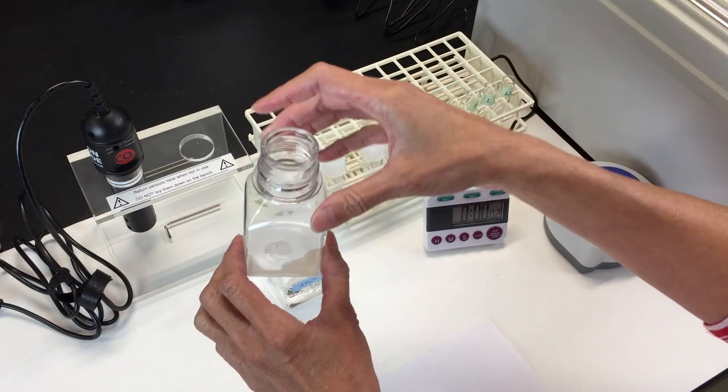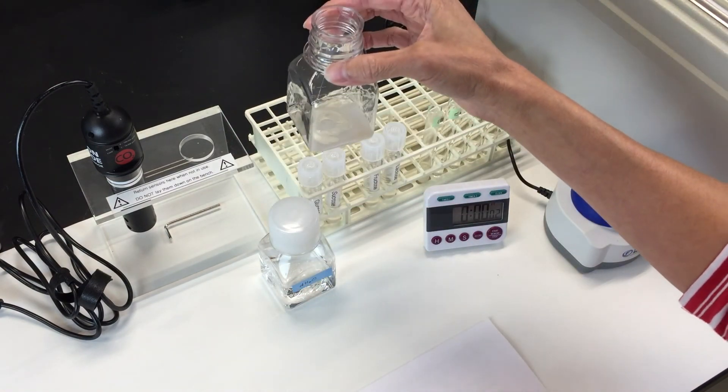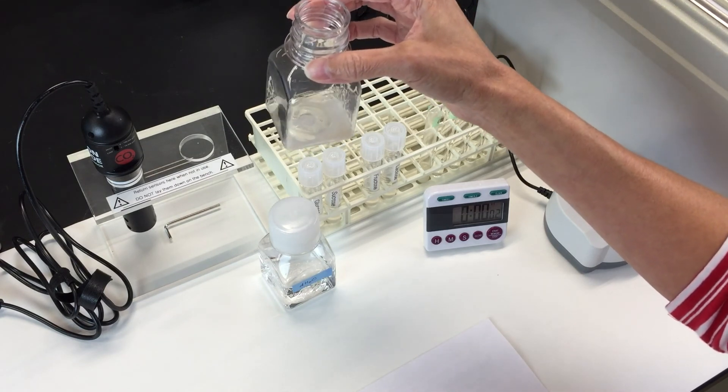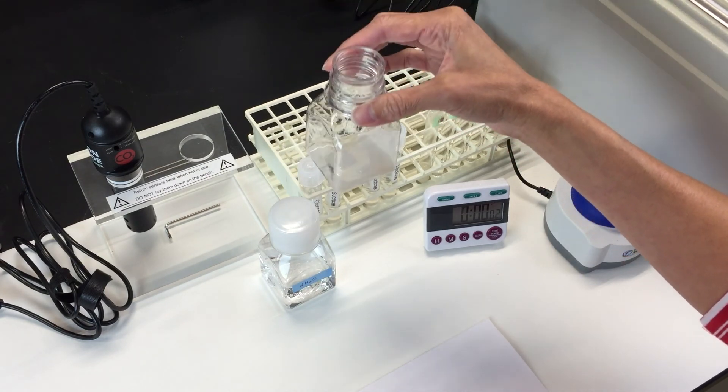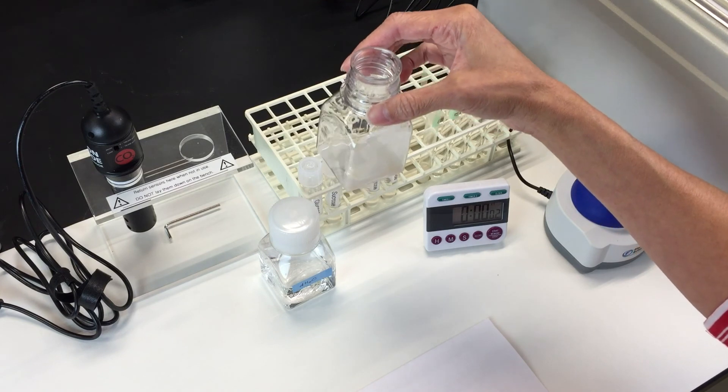You also want to take your respiration chamber, empty it out in the sink, rinse it out, and dry it really well, and get it ready for the next sugar, which is sucrose.